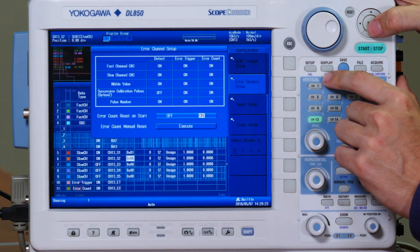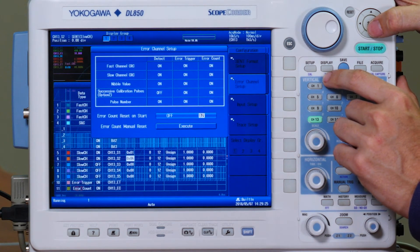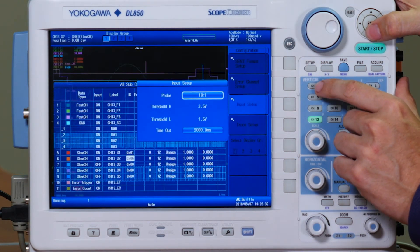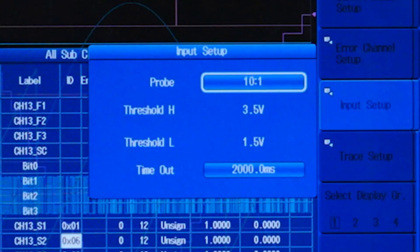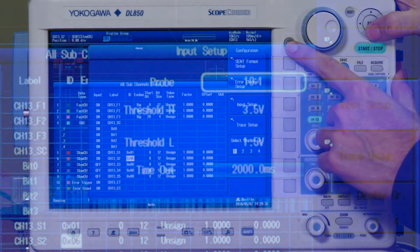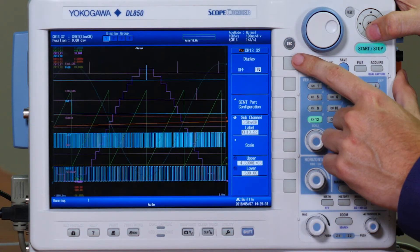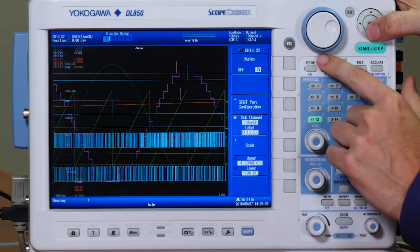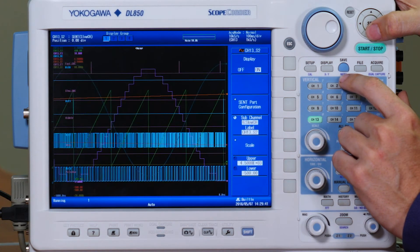We can choose which sub-channels we wish to trigger on and which channels triggers we wish to count. The input menu allows us to change our setting for the type of leads we are using. For our demonstration, we are using a setting of 10 to 1. We also have the ability to change range settings and scale settings for each channel, which makes it easier to observe multiple channels.